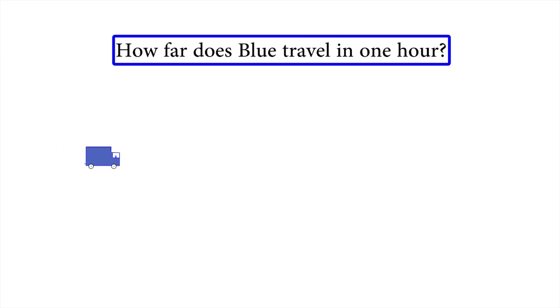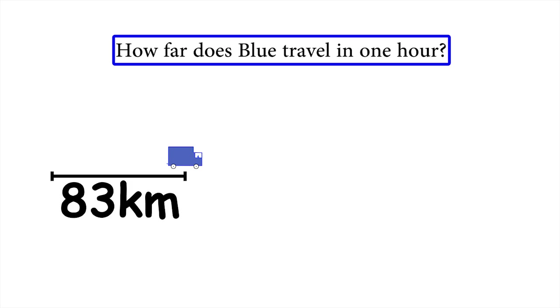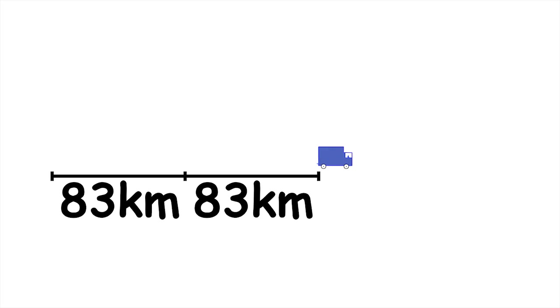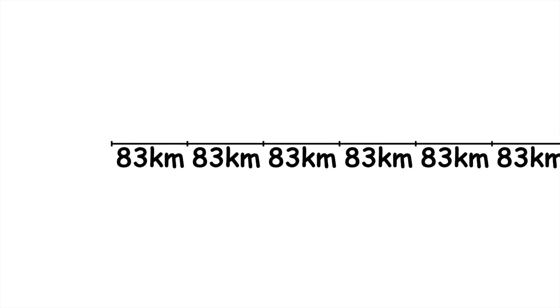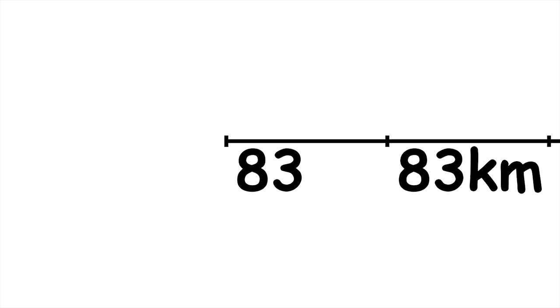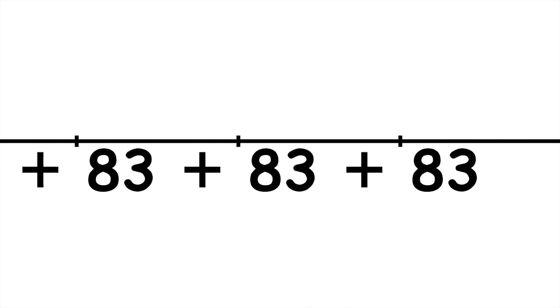If Blue travels at 83 kilometres an hour, in one hour he covers a distance of 83 kilometres. But then he travels another hour, so we have to add another 83 kilometres. We have to repeat this process 48 times, because that's the number of hours he spends travelling. To get the total distance travelled, we could add up all those individual distances: 83 plus 83 plus 83 and so on.